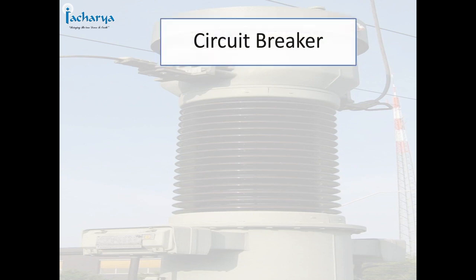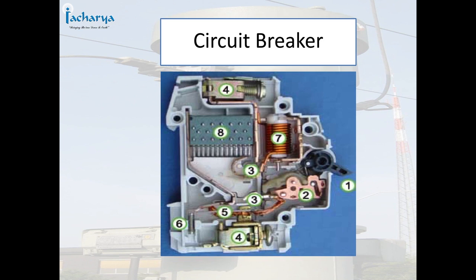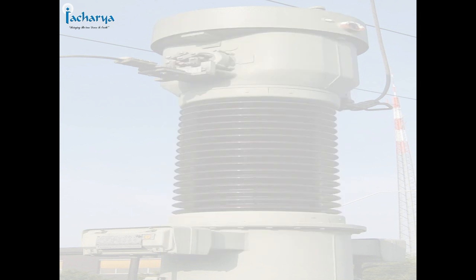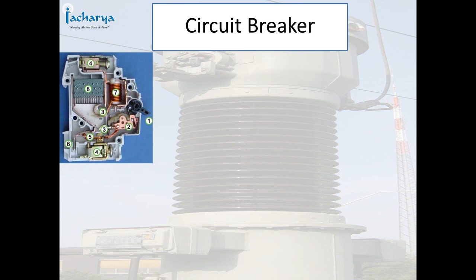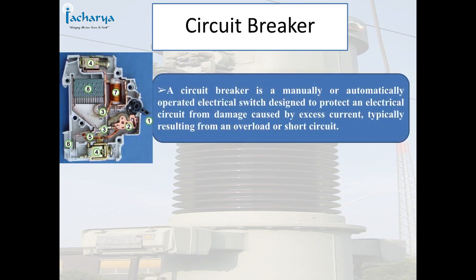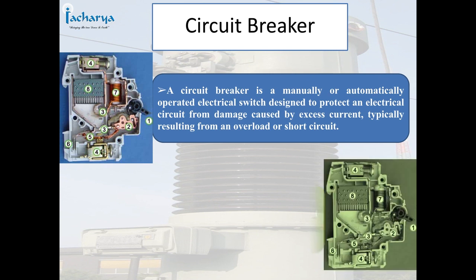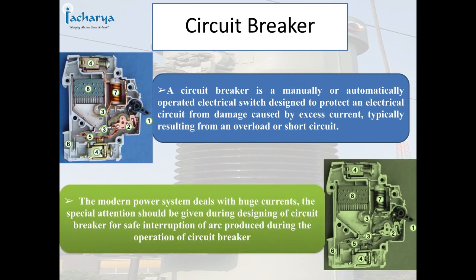Next, we are going to see about the function of the circuit breaker, its types and working principle. A circuit breaker is a manually or automatically operated electrical switch designed to protect an electrical circuit from damage caused by excess current, typically resulting from an overload or short circuit. The modern power system deals with huge currents.